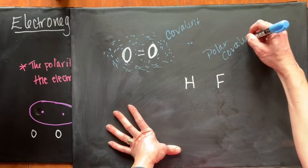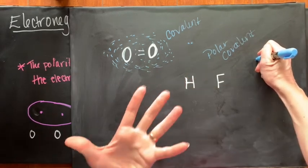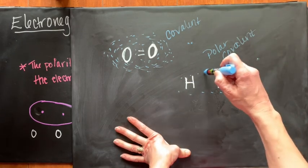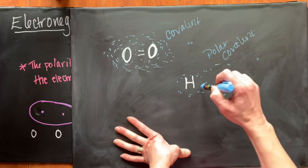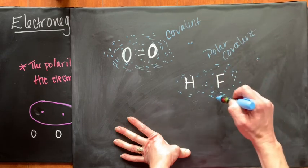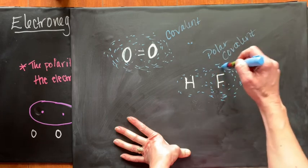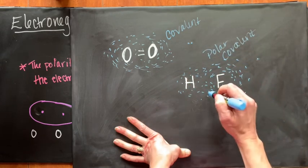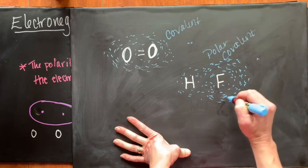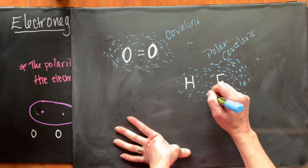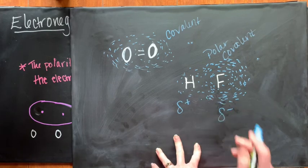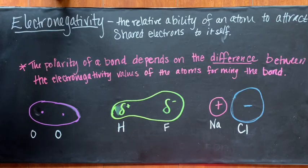This changes for a polar covalent bond. Fluorine attracts the electrons much more than hydrogen does, so while the electron can be around both atoms, it is much more likely to be found around the fluorine atom. Experiments confirm the electrons are much more likely to be around the fluorine atom, which gives it that partial negative charge and hydrogen that partial positive charge.